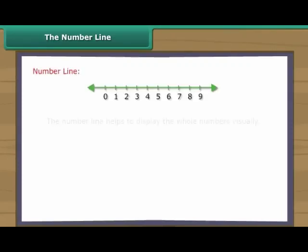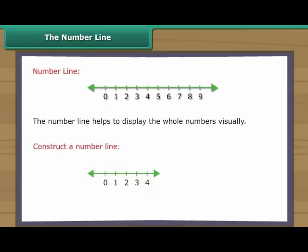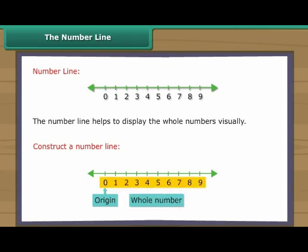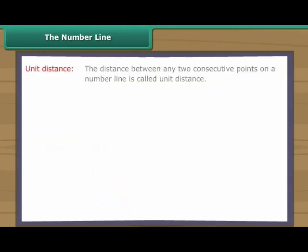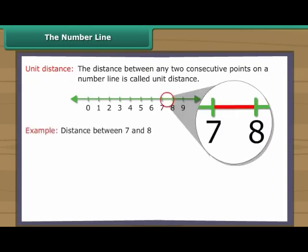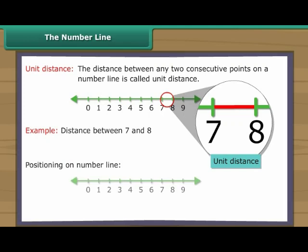The number line helps to display whole numbers visually. To construct a number line, we draw a straight line and choose any point on the line and label it zero — this point is called the origin. We then choose a convenient length and, moving to the right, mark off consecutive intervals along the line starting at zero. We label each new interval endpoint with the next whole number. The distance between any two consecutive points is called unit distance. Of two whole numbers, the greater number comes to the right of the other on the number line.